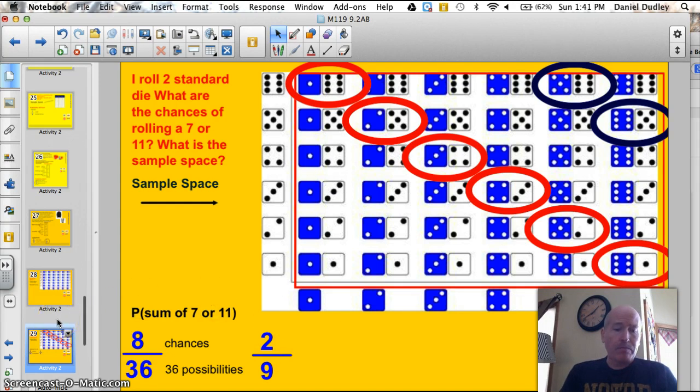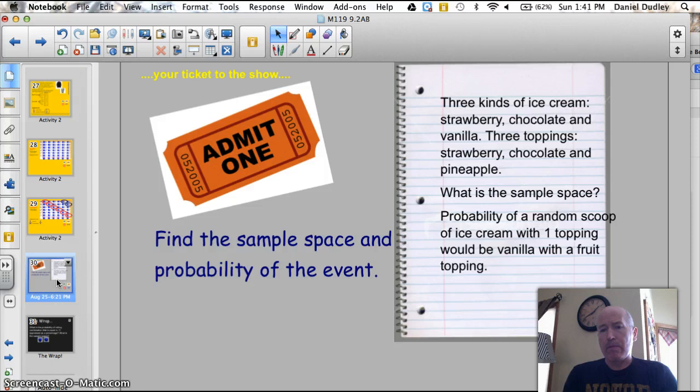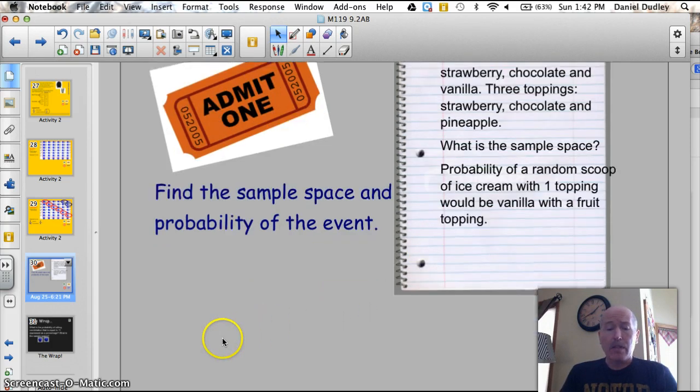Let me get you to the ticket to the show. We're going to work on a number of these types of problems tomorrow in class. Here's a quick one I made up. Find the sample space in the probability of this event. There are three kinds of ice cream. Strawberry, chocolate, and vanilla. There are three toppings. Strawberry, chocolate and pineapple. What is the sample space? In other words, how many different combinations with one topping and one kind of ice cream? And what is the probability of a random scoop of ice cream with one topping would be vanilla and a fruit topping? So, one scoop of ice cream and having a fruit topping on. Figure out what that sample space is and then what the probability of it is. Thank you and let's get to the trivia question.